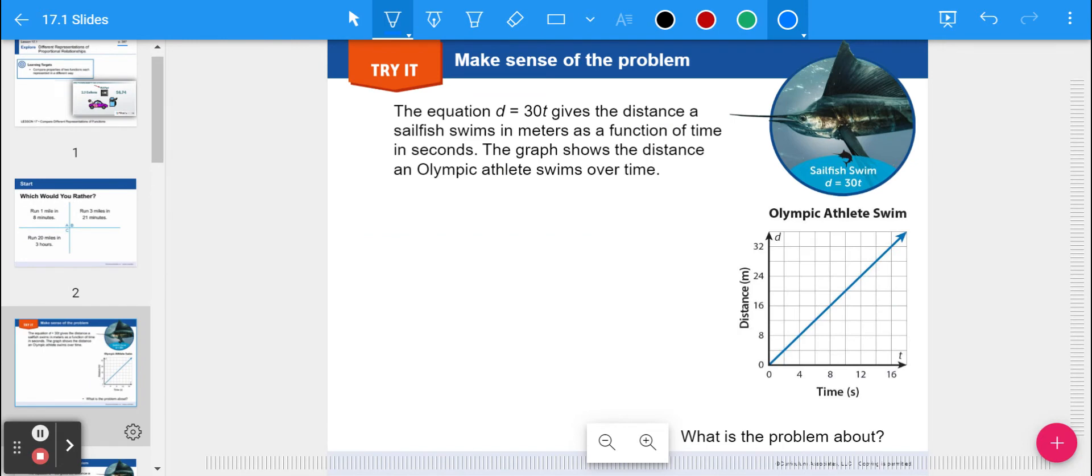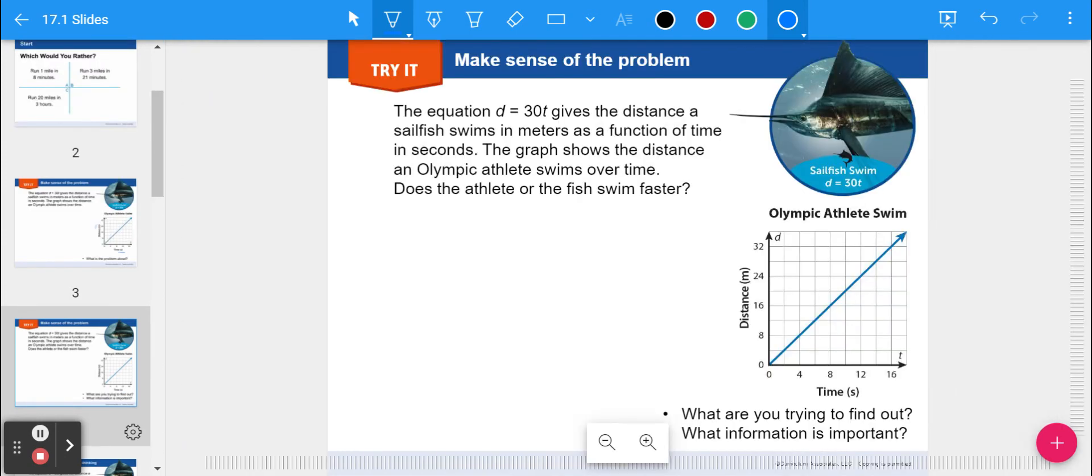Here's our problem of the day. I'd like you guys to read this through with me. I'm going to read it through once, and then I'm going to have you guys read it through on your own and try it. So it says the equation d equals 30t gives the distance a sailfish swims in meters as a function of time in seconds. The graph shows the distance an Olympic athlete swims over time, and you can see on the graph it is also in meters per second. So the question asked here is, does the athlete or the fish swim faster?